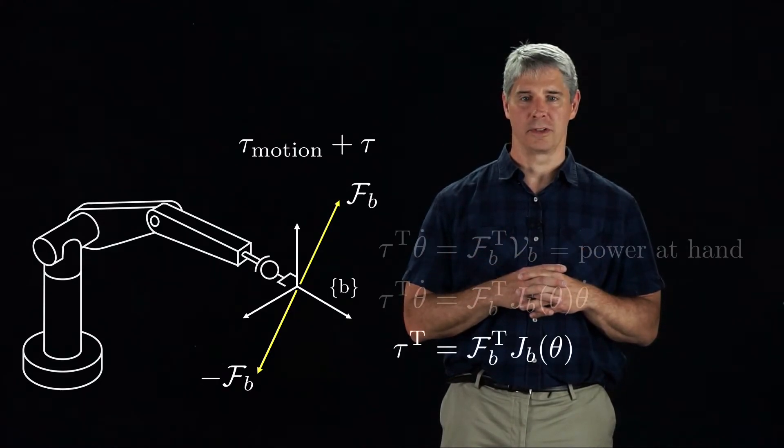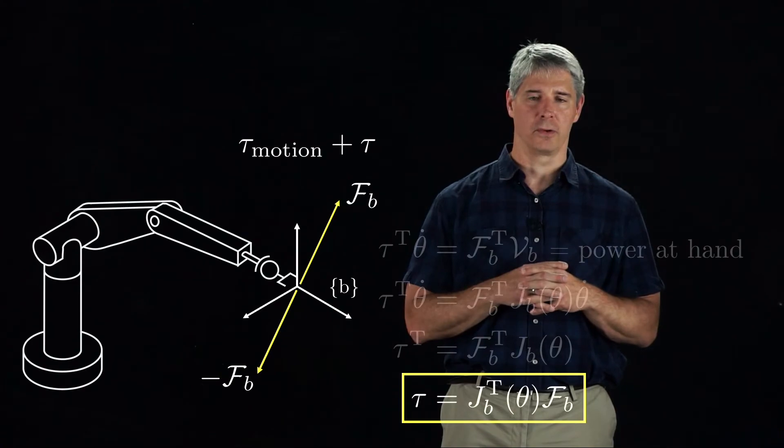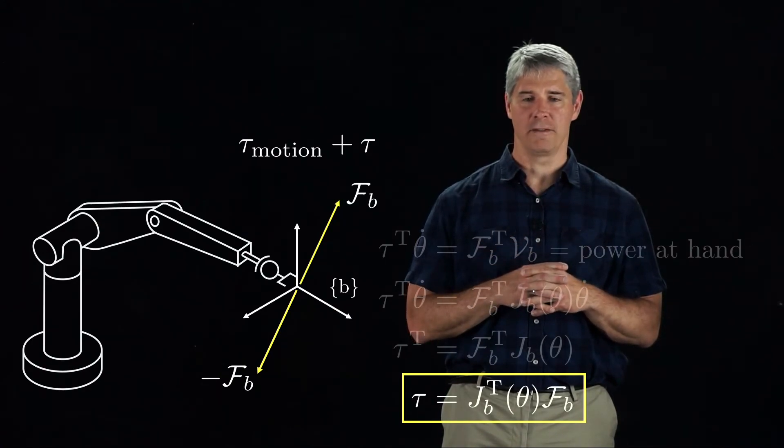In getting rid of the transposes, we get the relationship we were looking for: tau equals Jb transpose times Fb.